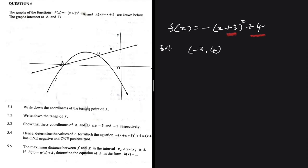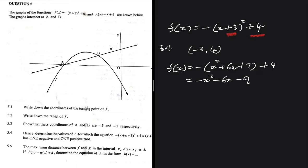We can clearly see that in our equation. But for most people it's a bit confusing when the equation is like this — they like to solve it first and then use x = -b/2a. So if we do that, we're going to have f(x) = -x² - 6x - 9 + 4, which equals -x² - 6x - 5.